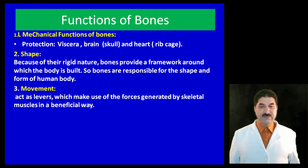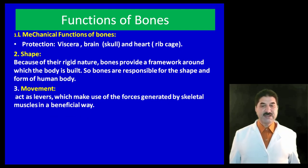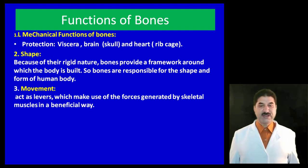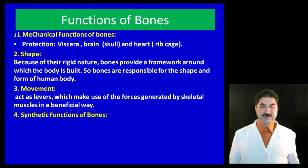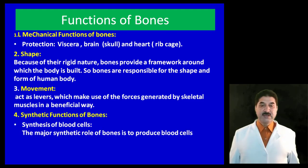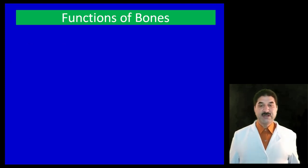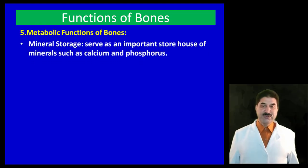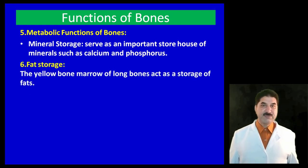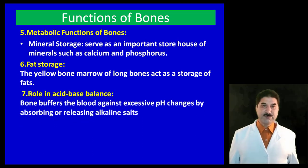Bones act as levers which make use of the force generated by skeletal muscles in a beneficial way. The synthetic function of bones includes synthesis of blood cells — the major synthetic role is to produce blood cells. Regarding metabolic functions, bones serve as an important storehouse of minerals such as calcium and phosphorus. The yellow bone marrow of long bones acts as a storage of fats. Bones also play an important role in maintaining acid-base balance of the body.